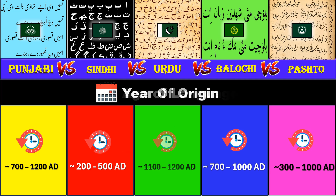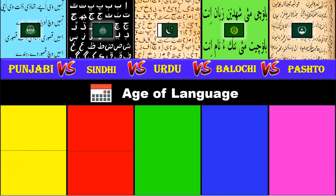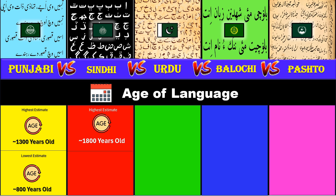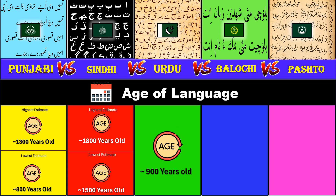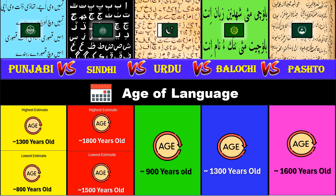Age of language. Higher estimate for Punjabi is 1,300 years while lower estimate is 800 years. For Sindhi it's 1,800 years and 1,500 years. Urdu: 900 years. Balochi and Pashto are 1,300 and 1,600 years old respectively.